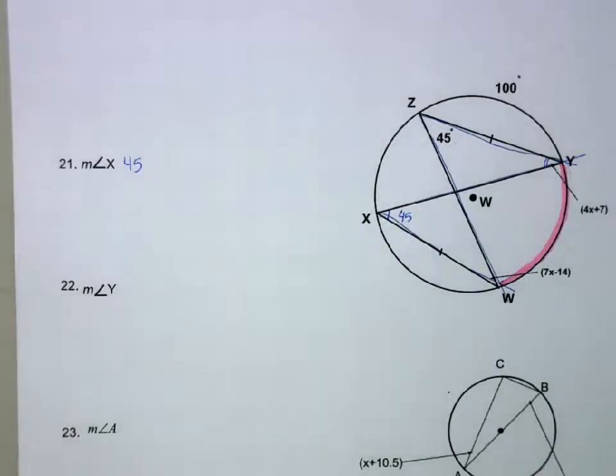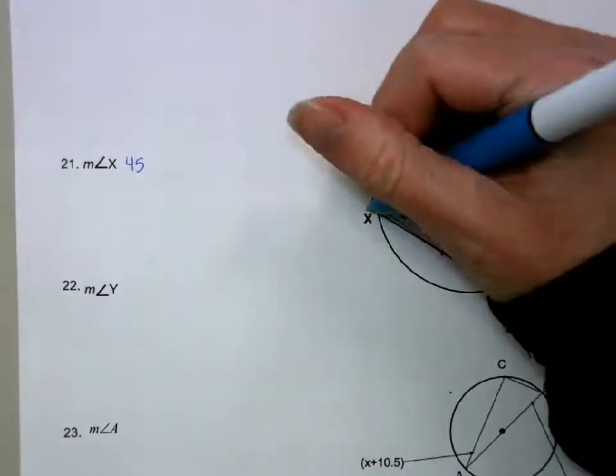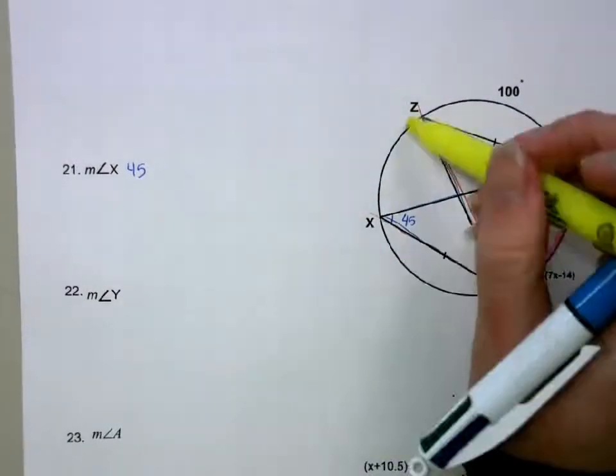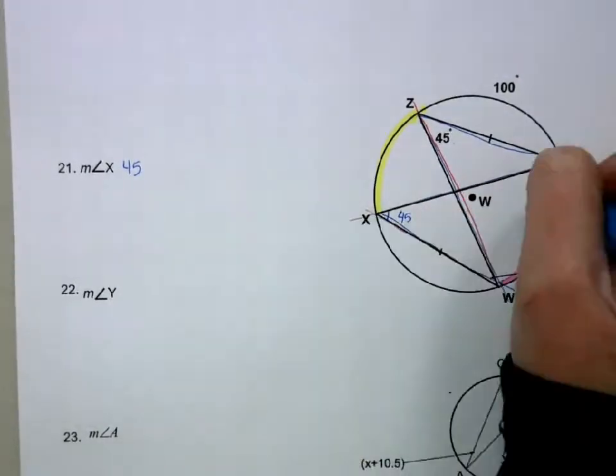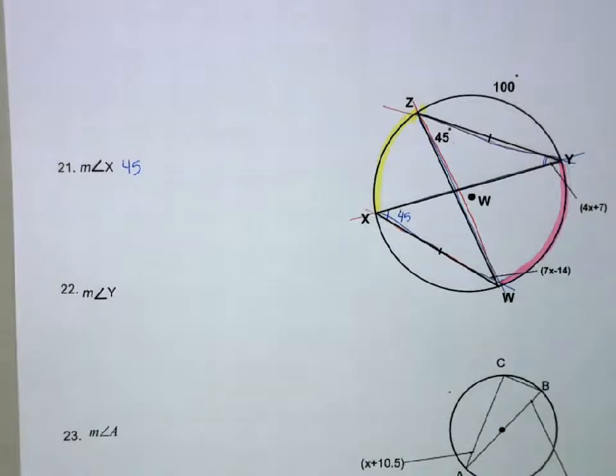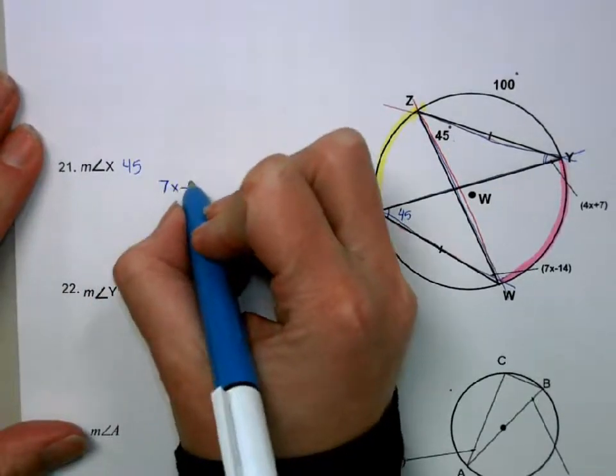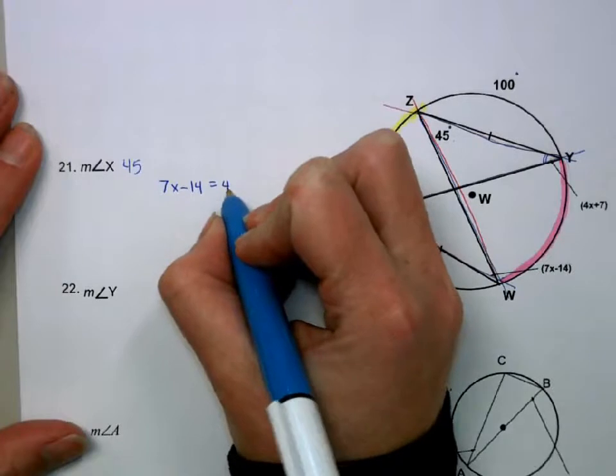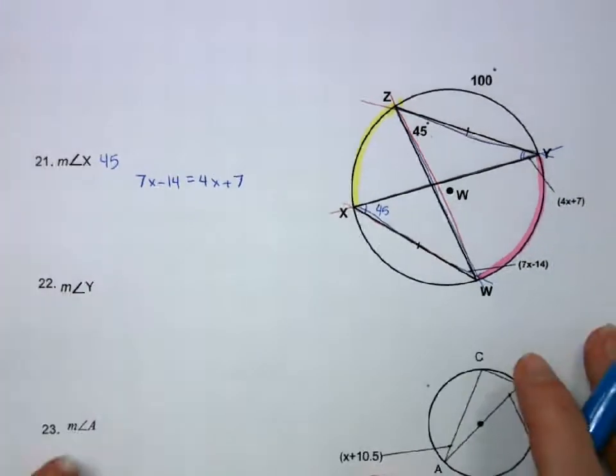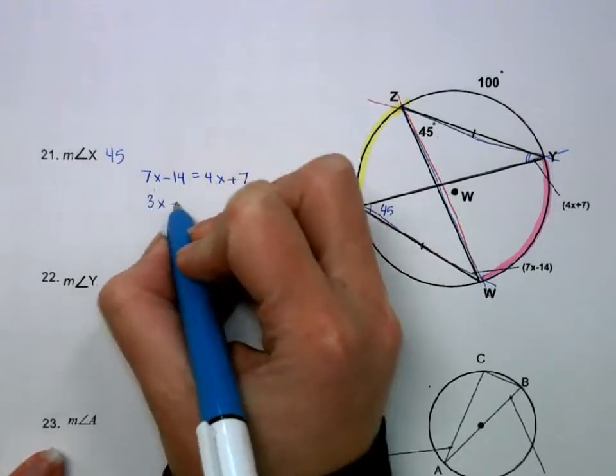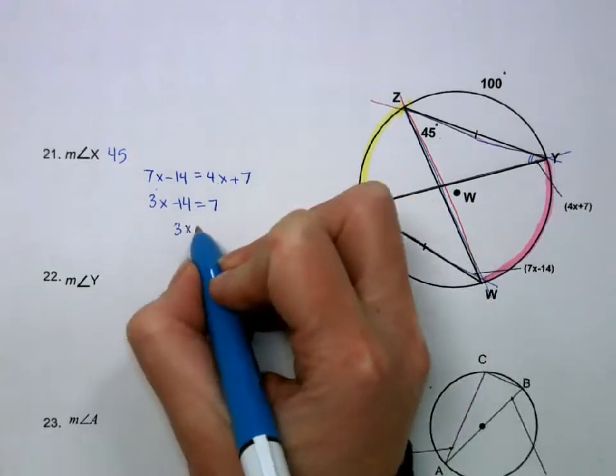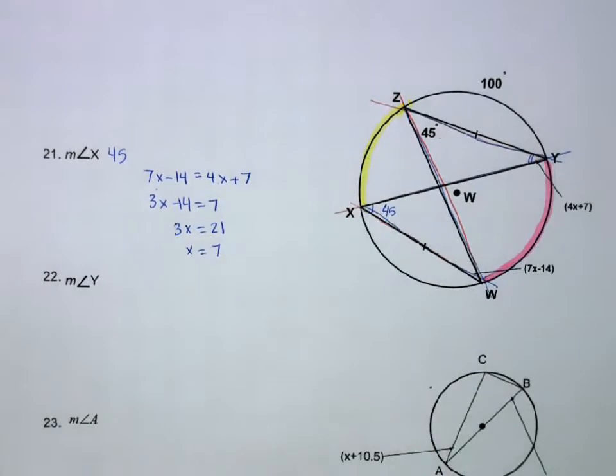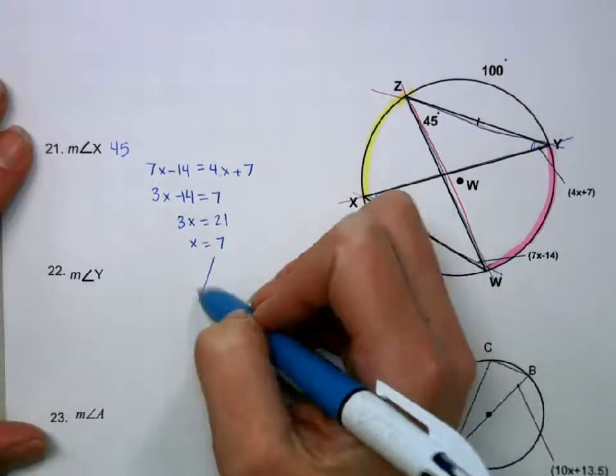For the other two, W intercepts this arc. And Y intersects that same arc. So those two angles are equal, so I can set those equations equal to each other. So I'm going to set 7X minus 14 equal to 4X plus 7, and then work through this algebra. So subtract 4X from both sides. Add 14 gives me 21, and then divide by 3. That gives me what X is equal to.